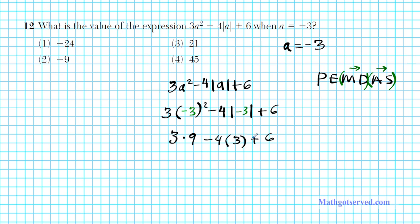So we have multiplication, subtraction, and addition here. So we have to do multiplication. It ranks higher in our hierarchy of the order of operations. So 3 times 9 is 27. Negative 4 times positive 3 is negative 12 plus 6. So now we just subtract. 27 minus 12 is 15. 15 plus 6 is 21. So our final answer is option number 3.